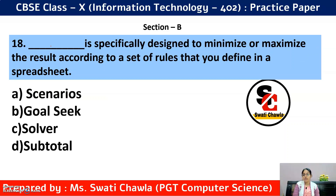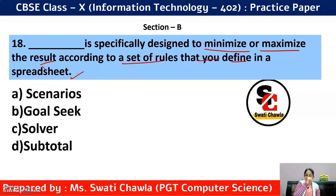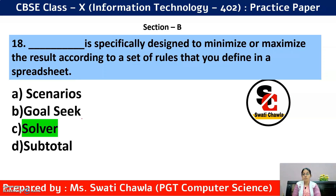Question 18: Dash is specifically designed to minimize or maximize the result according to the set of rules that you define in a worksheet. To minimize or maximize a value, we use option C — Solver. The Solver dialog box was also shown earlier, which has the minimize/maximize option.